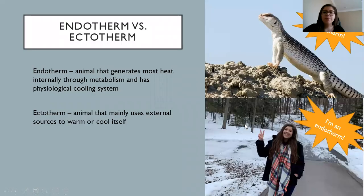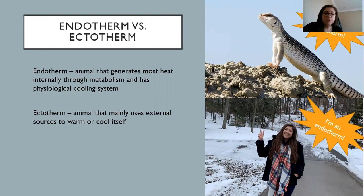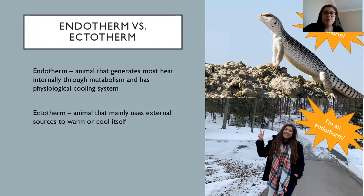I'm going to start by talking about endotherms and ectotherms. Endotherms you can always think of as warm-blooded. Endo means inside and thermic is heat, so we have heat inside — we're endotherms. The two warm-blooded vertebrate groups are birds and mammals, for example, you and I.